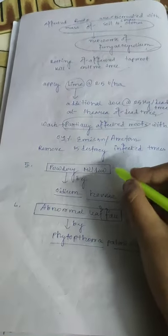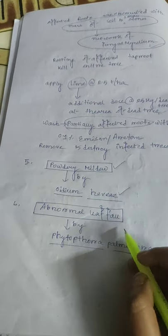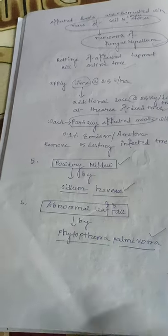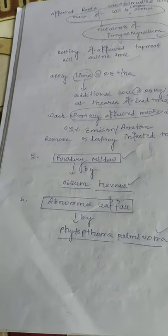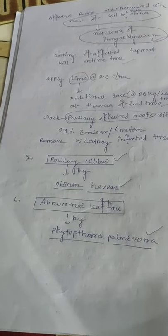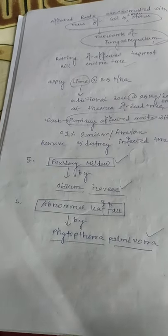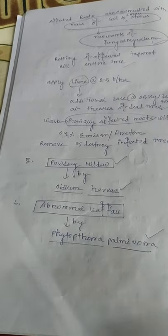The fifth type of disease of rubber is powdery mildew, caused by Oidium heveae. Abnormal leaf fall in rubber is caused by Phytophthora palmivora. These are important diseases to distinguish from the other rubber diseases discussed.